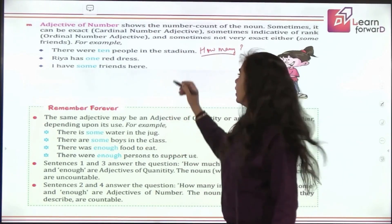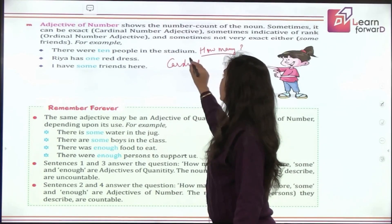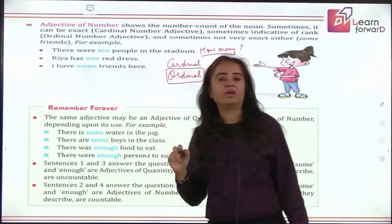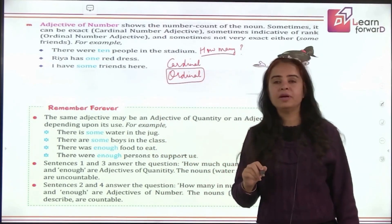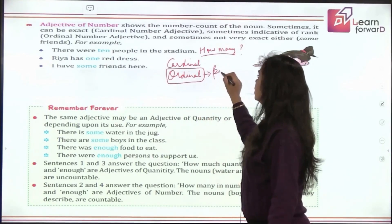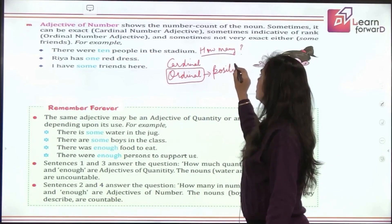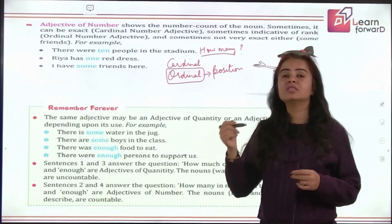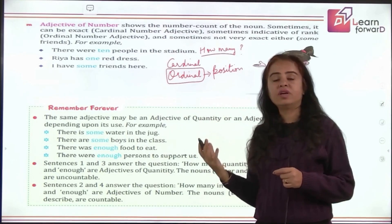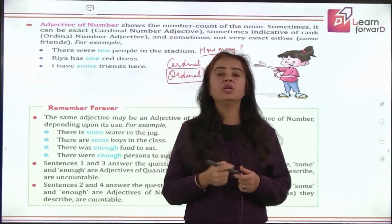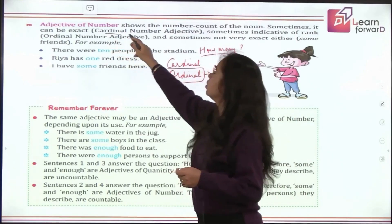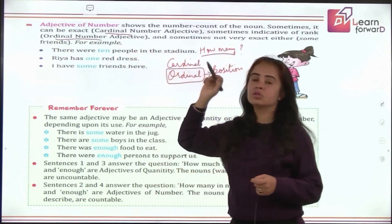When we put the question 'how many' and get an answer in number, that is adjective of number. They can be cardinal numbers or ordinal numbers — you would have learned these in math. Ordinal numbers tell you position: first, second, third, fourth. Cardinal numbers are for counting: one, two, three. They should be countable — for example, 'there were 10 people' or 'Rhea has one red dress.'